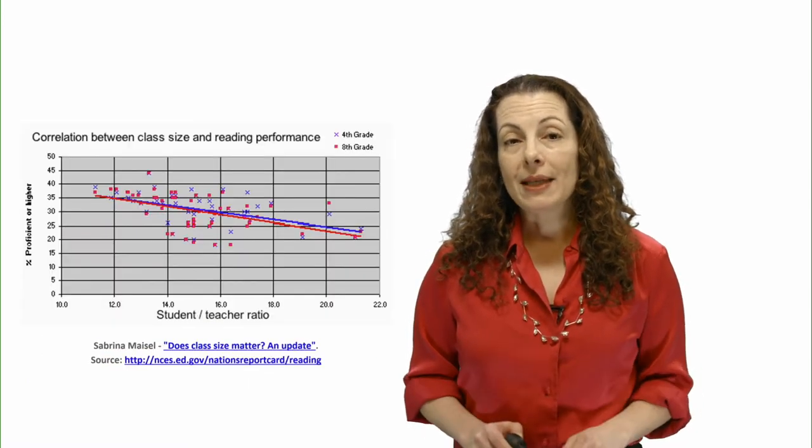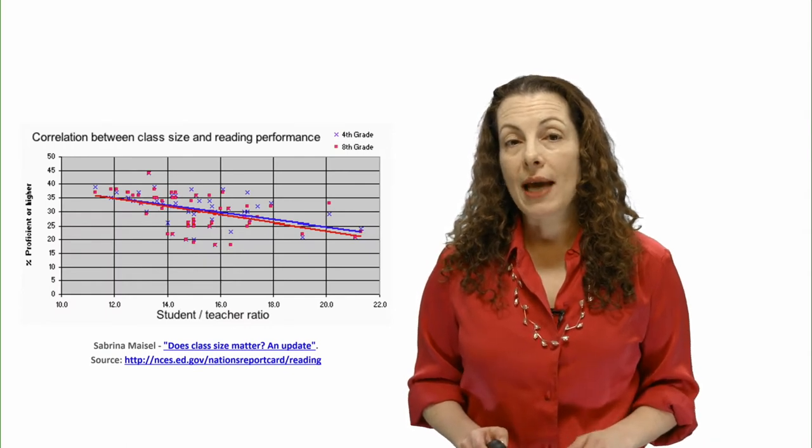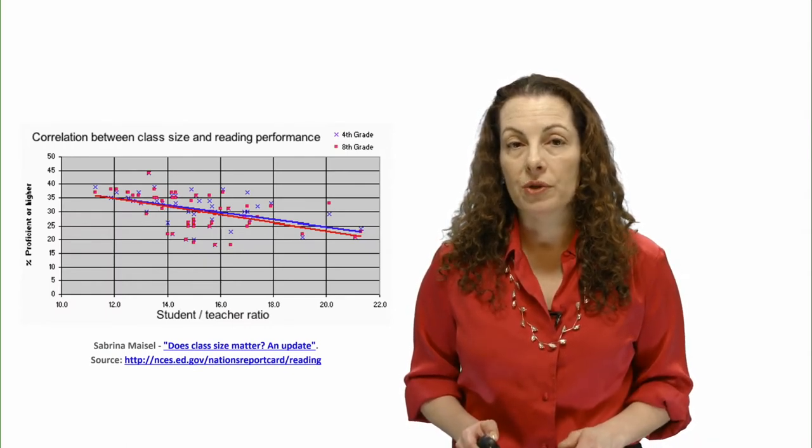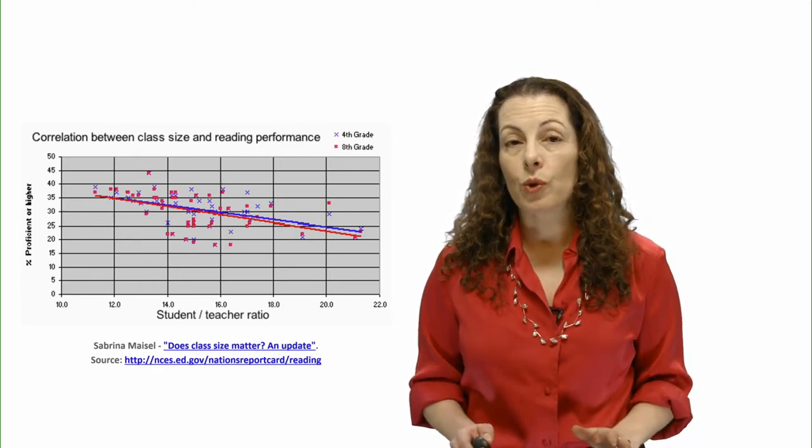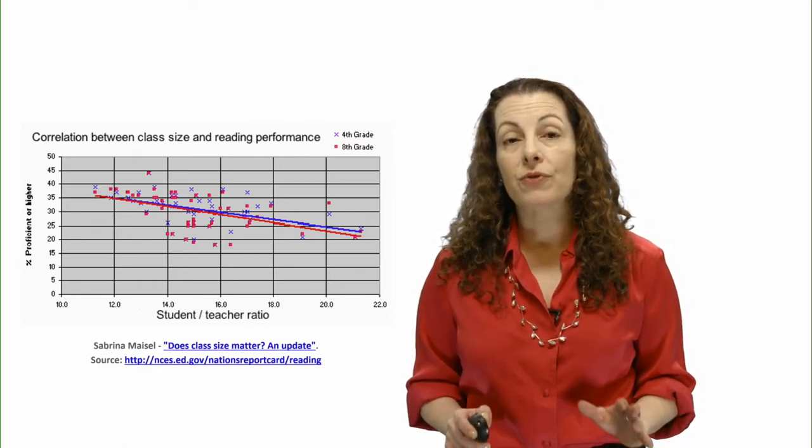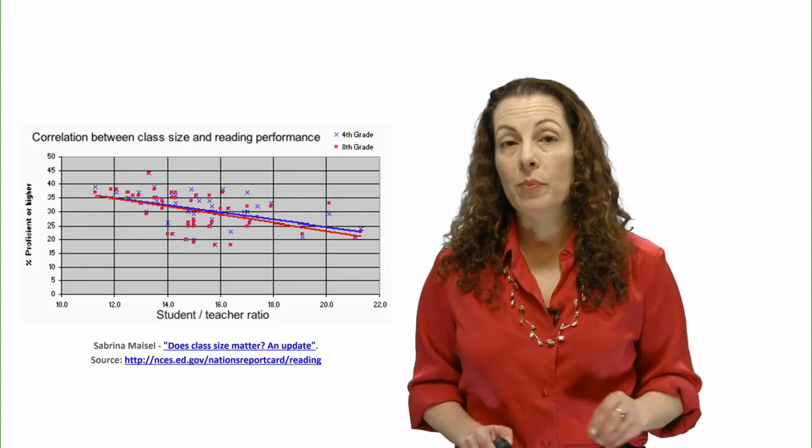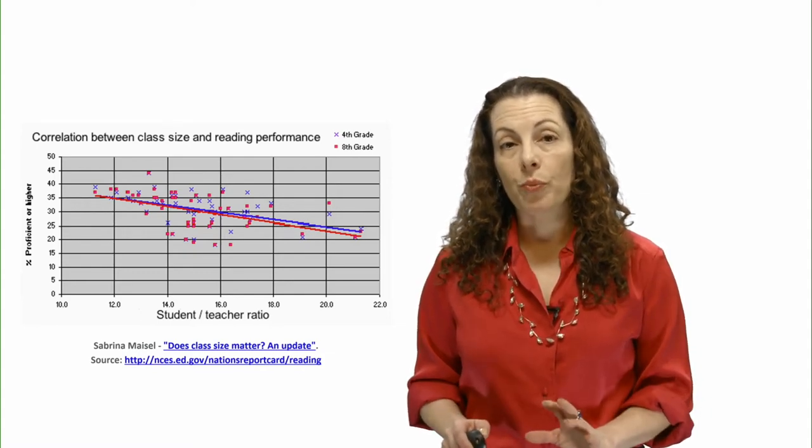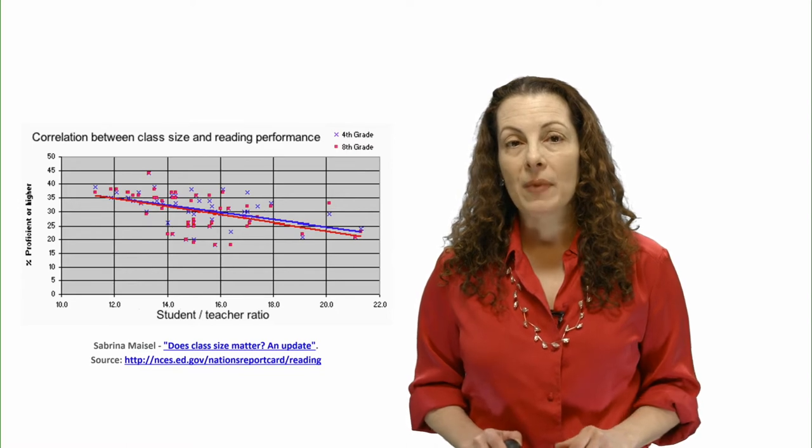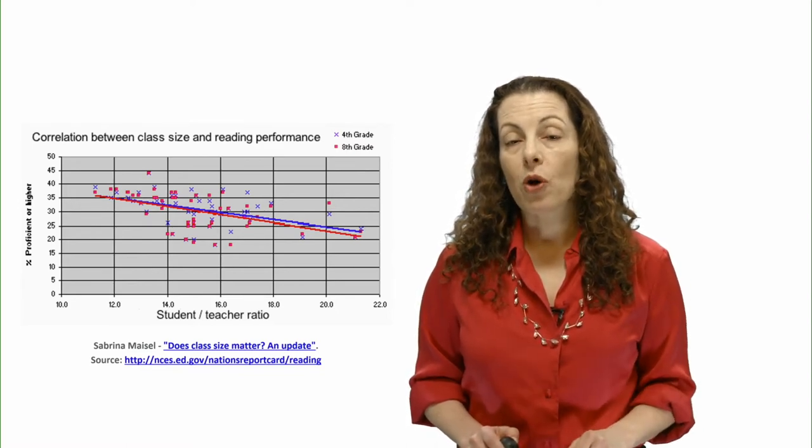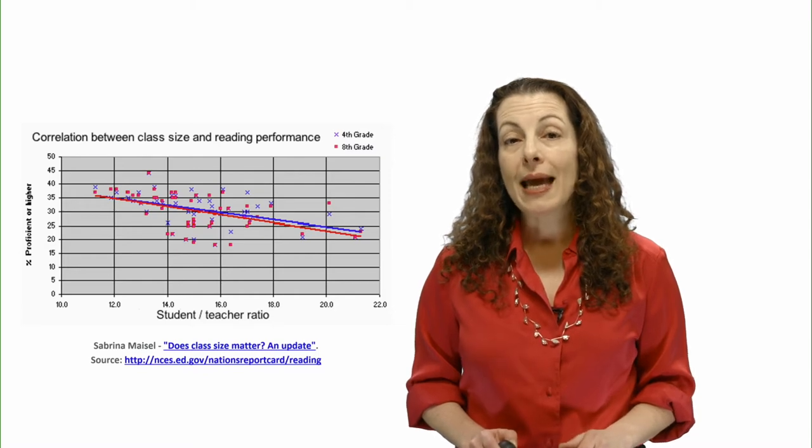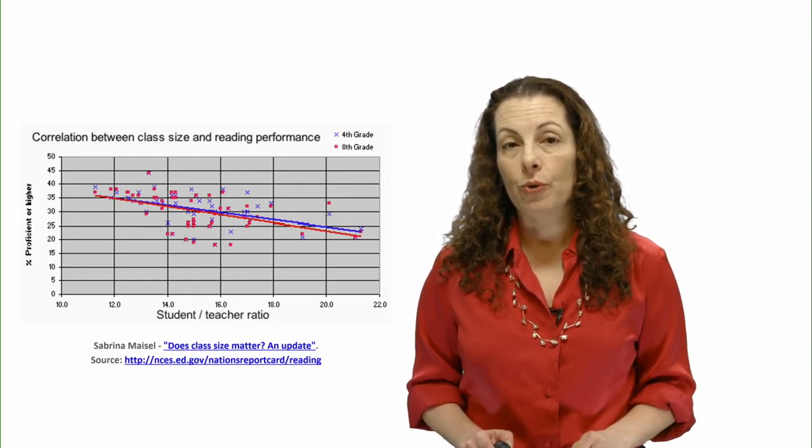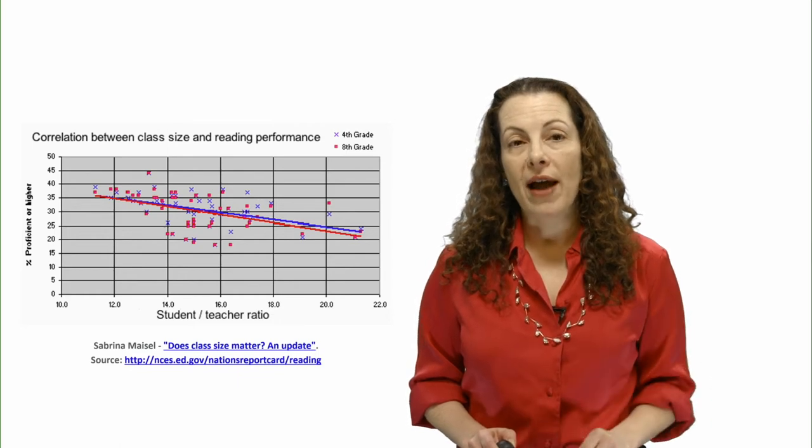For example, in Tennessee, an RCT was used to test the impact of reducing class size on student test scores. Over four years, teachers and classrooms across 80 schools were randomly assigned to classes of smaller sizes – that was the treatment group – or to a control group – that is, regular-sized classes. Students in small classes performed four percentage points better in test scores than those in the larger classes in the first year of the experiment alone, and one percentage point better every year thereafter.